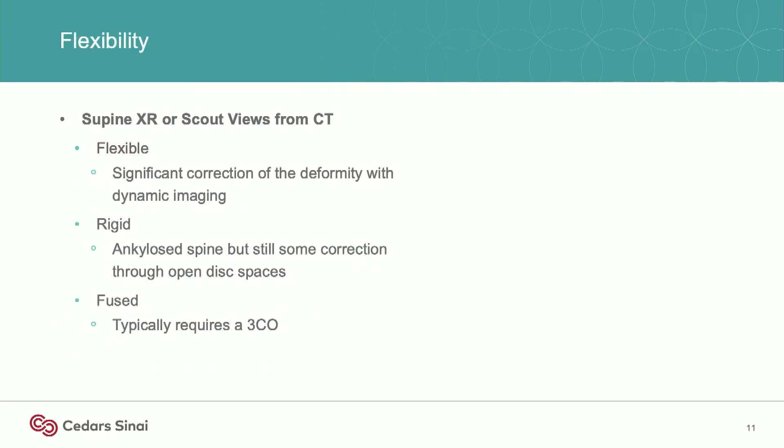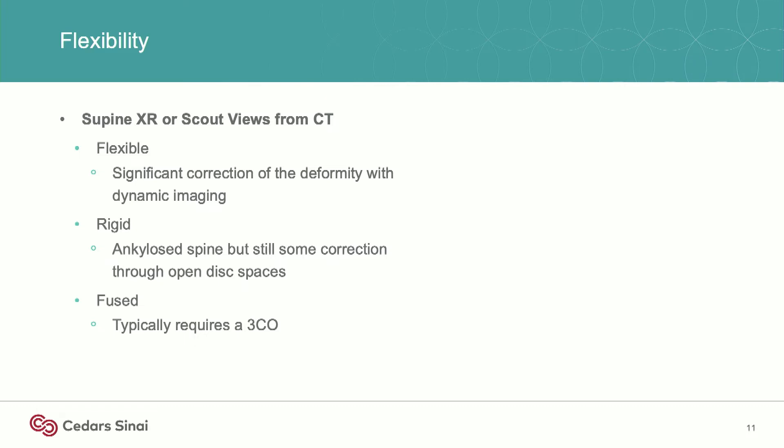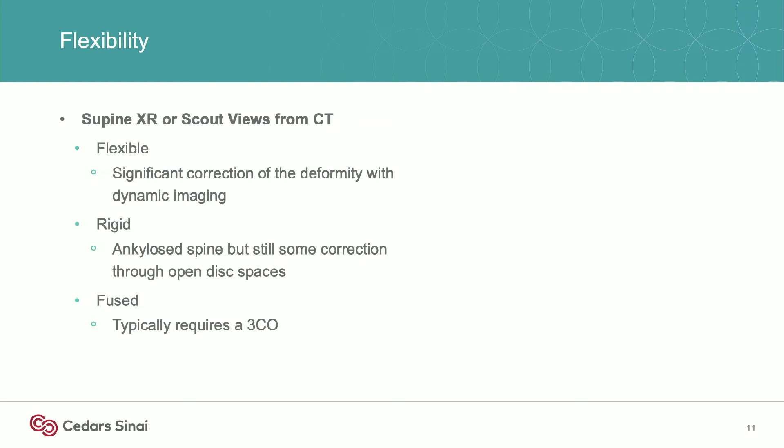For flexibility, supine X-rays or scout views from your CT are going to give you a ton of information. If the deformity largely corrects when they lie down and you have multiple disc spaces to work through, there's almost no situation in a flexible spine where you're going to need to do a three-column osteotomy. The rigid ones are the ones that are a little more difficult to make that decision.